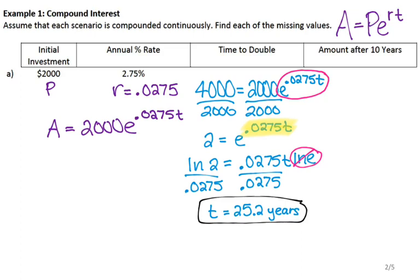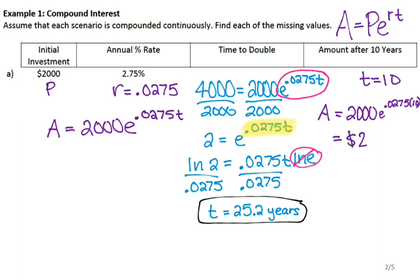For the next problem, I want to find the amount after 10 years — so I want to find A when T is 10. I take 10 and plug it in for T. So I have A equals 2000 times e to the 0.0275 times 10. Plugging that into the calculator gives me approximately $2,633.06. Since we're talking about money, you want to round to two decimal places.